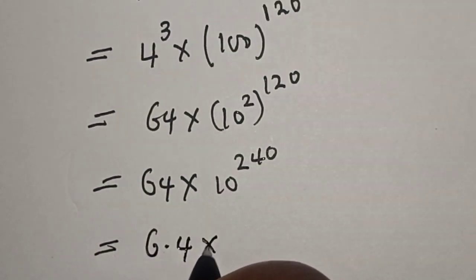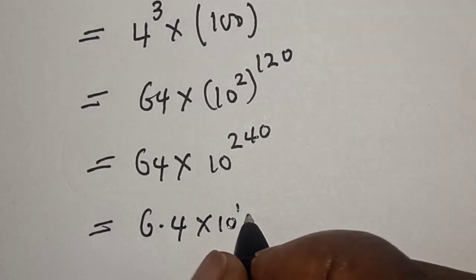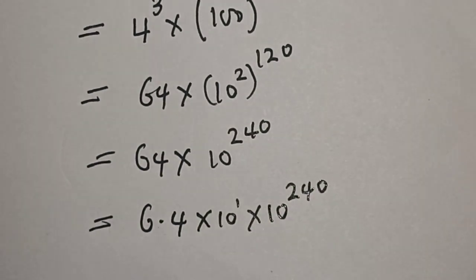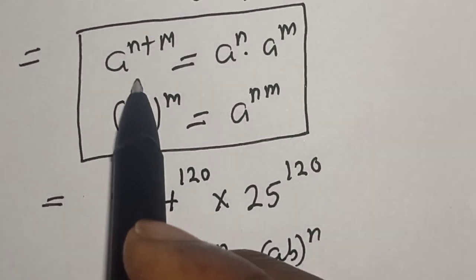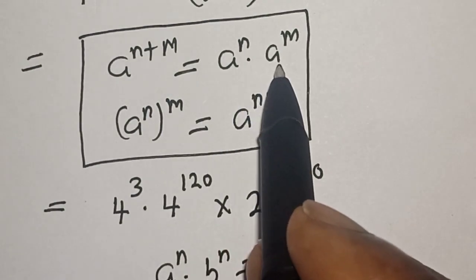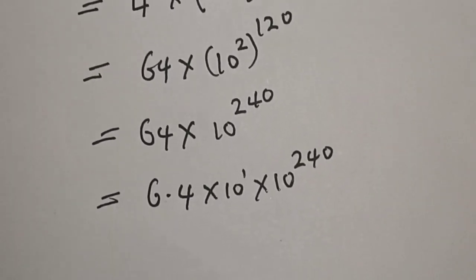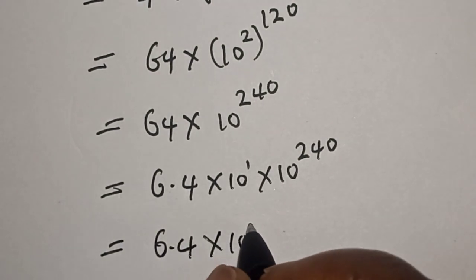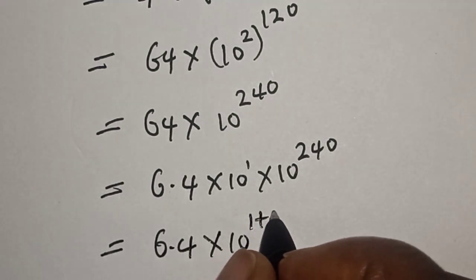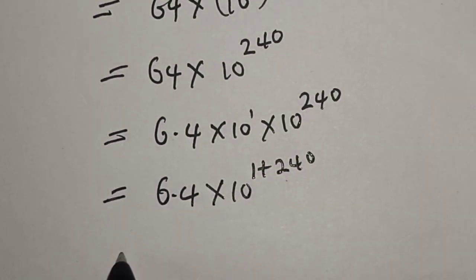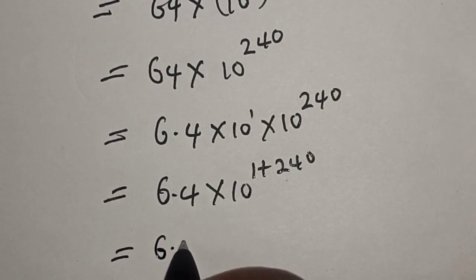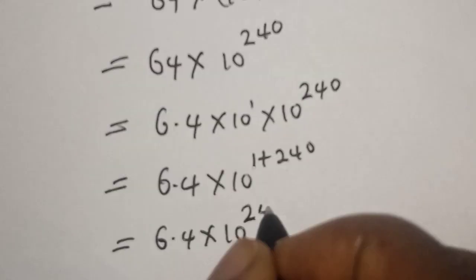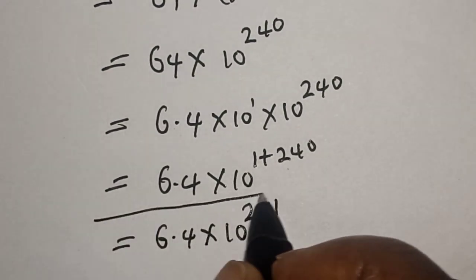This gives us 6.4 times 10 raised to the power of 1, times 10 raised to the power of 240. Using the rule that a raised to power n plus m equals a raised to power n multiplied by a raised to power m, this becomes 6.4 times 10 raised to the power of 1 plus 240, which equals 6.4 times 10 to the power of 241. That is our final answer.